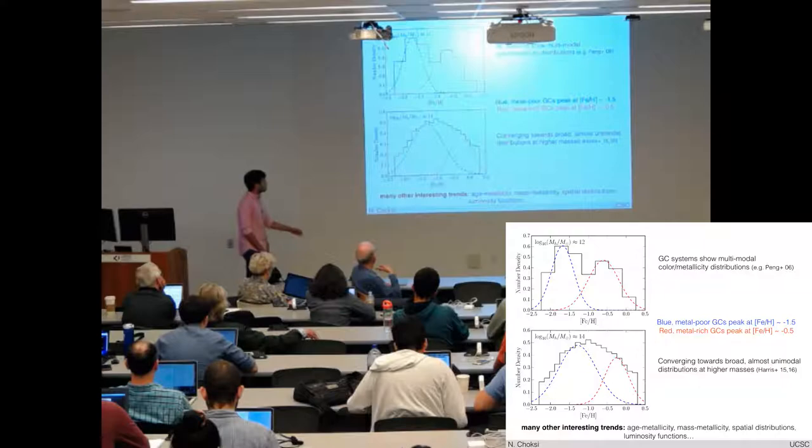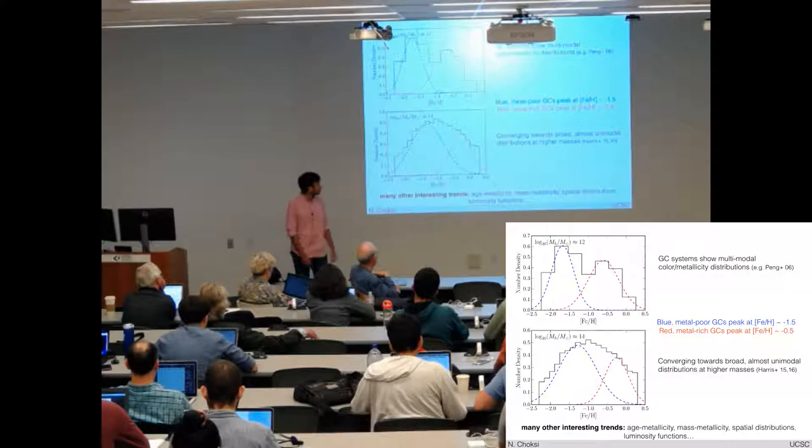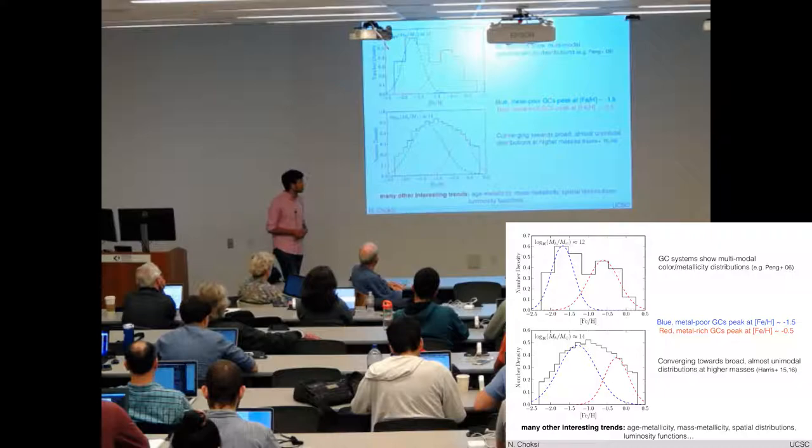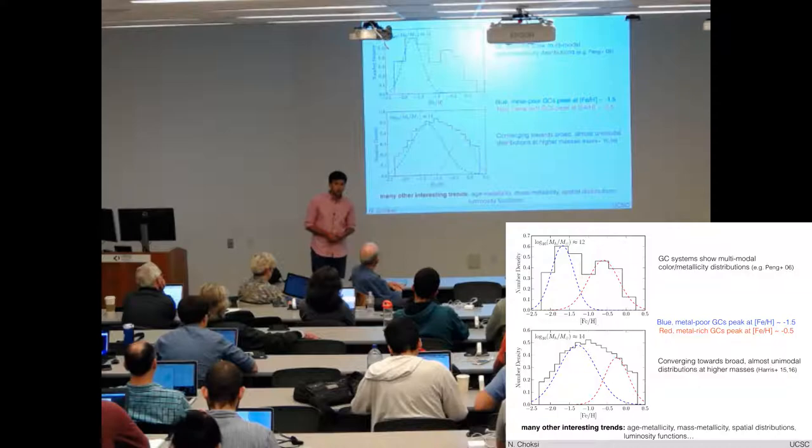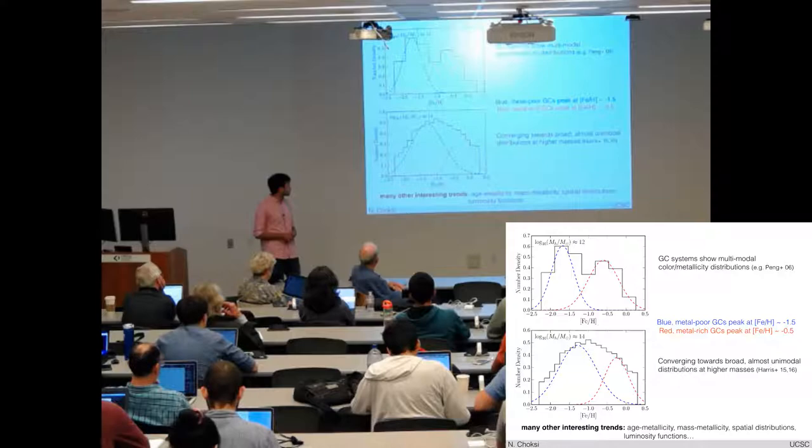There's also this famous bimodality multimodality in the globular cluster metallicity distribution, which was first recognized in really great detail in the Virgo cluster survey. But in the last five or so years, as we've gotten metallicity distributions of globular clusters in brightest cluster galaxies, thanks to Bill Harris's HST survey,